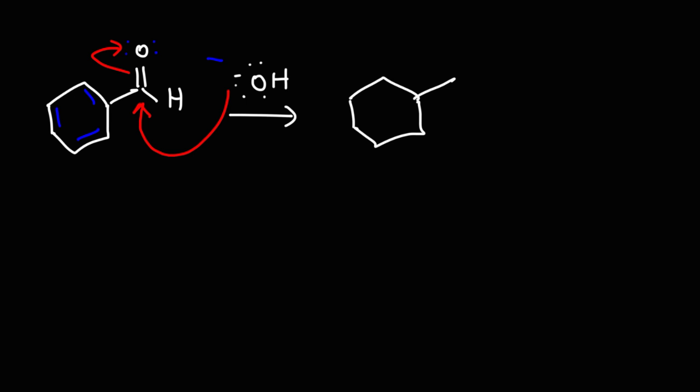And so we're going to get a tetrahedral intermediate that looks like this. So right now, the oxygen has three lone pairs and the negative charge. Now, at this point,